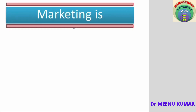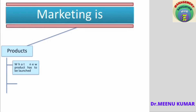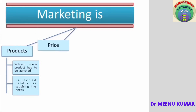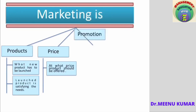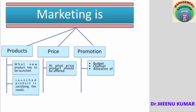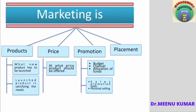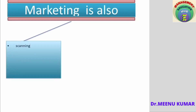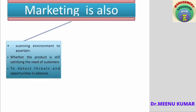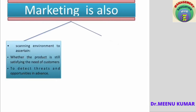In short, in terms of product, marketing decides which new product has to be launched and whether the existing product is satisfying customer needs. In terms of price, marketing ensures the price is affordable for the customer. In terms of promotion, marketing decides the budget, allocation of funds, channel selection, sales promotional tools, and whether personal selling is required. In terms of distribution, marketing decides the number of intermediaries and the type of distribution. Marketing also involves scanning the environment for threats and opportunities, and maintaining good relationships with customers and all other stakeholders.